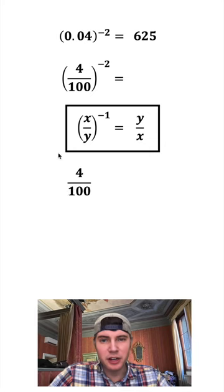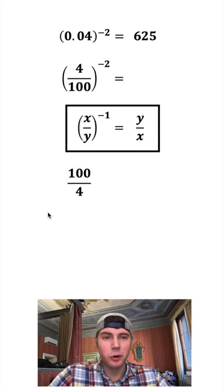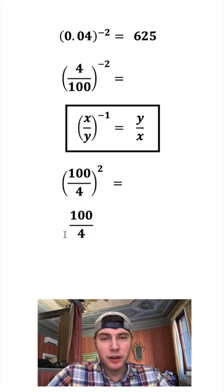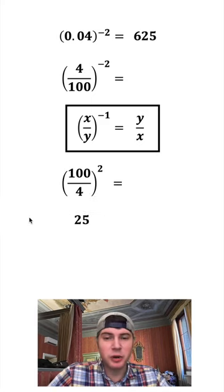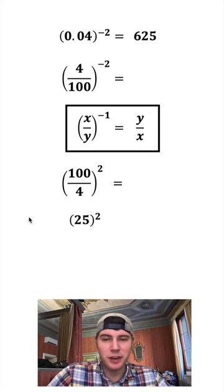Let's copy down the 4 over 100, and because of the negative exponent, let's take the reciprocal, give us 100 over 4, and now it's to the positive 2 exponent. Well, 100 divided by 4 is the same thing as 25. So we want to square the 25. And 25 squared is equal to 625.